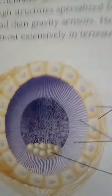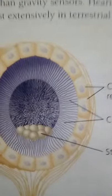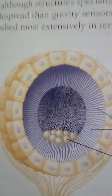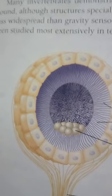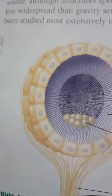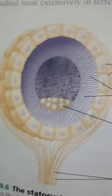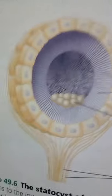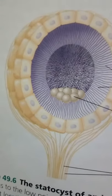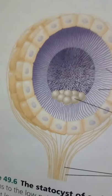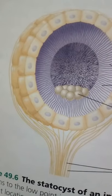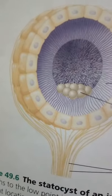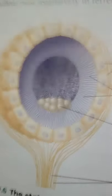The mechanoreceptors involved with hearing and equilibrium detect settling particles or moving fluid. Hearing and the perception of balance are related in most animals; both involve mechanoreceptors that produce receptor potentials when part of the membrane is bent by settling particles or moving fluid. Most invertebrates have sensory organs called statocysts that contain mechanoreceptors and function in their sense of equilibrium.